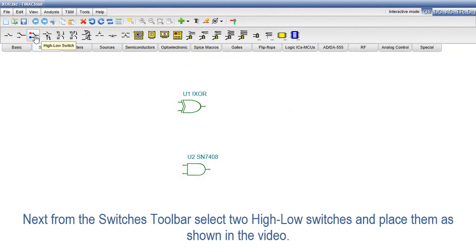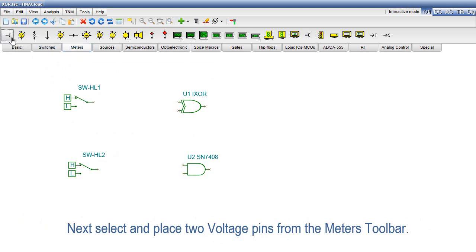Next, from the switches toolbar, select two high-low switches and place them as shown in the video. Next, select and place two voltage pins from the meters toolbar.